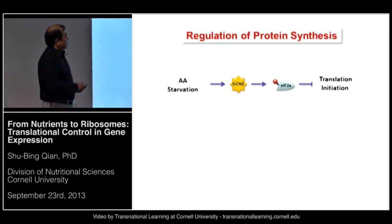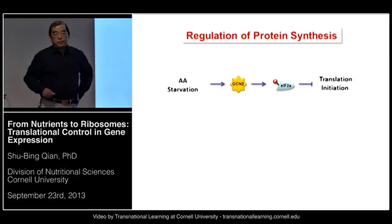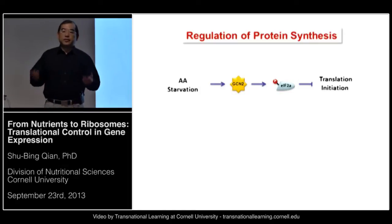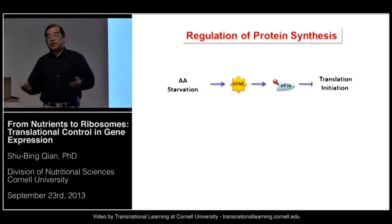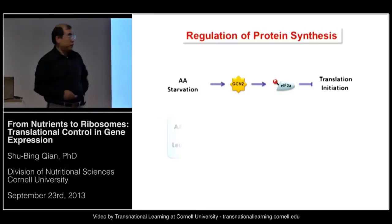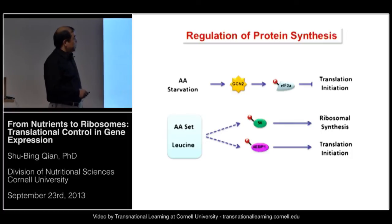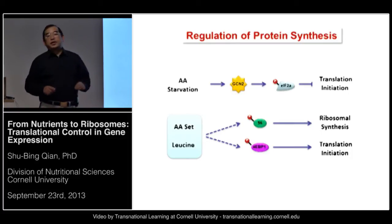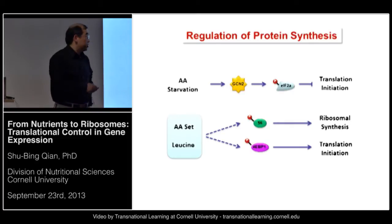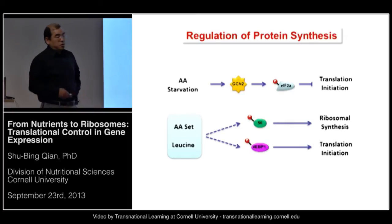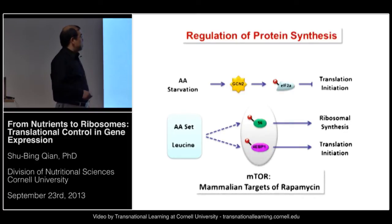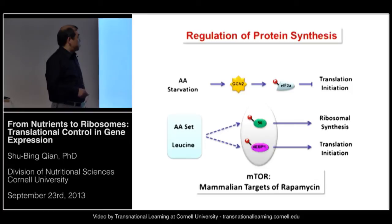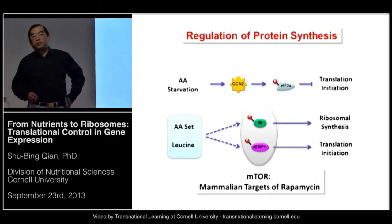In addition to the GCN2 pathway, other translation factors are also subject to regulation. For example, the phosphorylation of S6 and 4EBP1 — their phosphorylation status has a very good temporal correlation with overall protein synthesis. Today we know these are actually downstream targets of mTOR, short for the mammalian target of rapamycin.